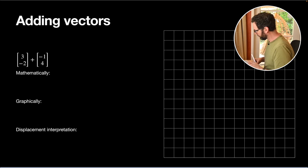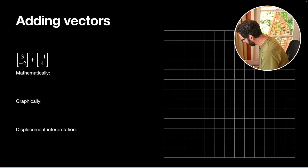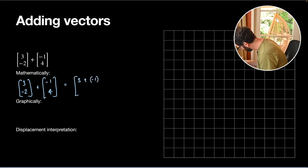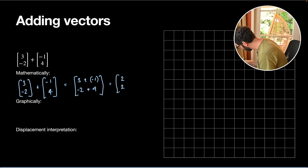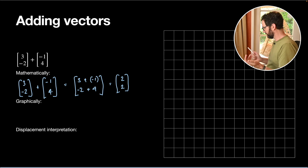We'll start by looking at what it means to add two vectors. At the mathematical level, if we just want to do the calculation of two vectors adding together, we can ignore what it means and literally just add the components separately. So it's going to be 3 plus negative 1, and negative 2 plus 4, which gives 2 and positive 2. If we're just dealing with components, that's all we have to do — just add the numbers up.